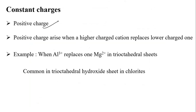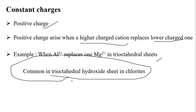There is also a chance of positive charge arising — it is the opposite of negative charge. Positive charge arises when a higher-charged cation replaces a lower-charged one. The best example is when aluminium replaces magnesium in a trioctahedral sheet. This is commonly seen in the trioctahedral sheets of chlorite.